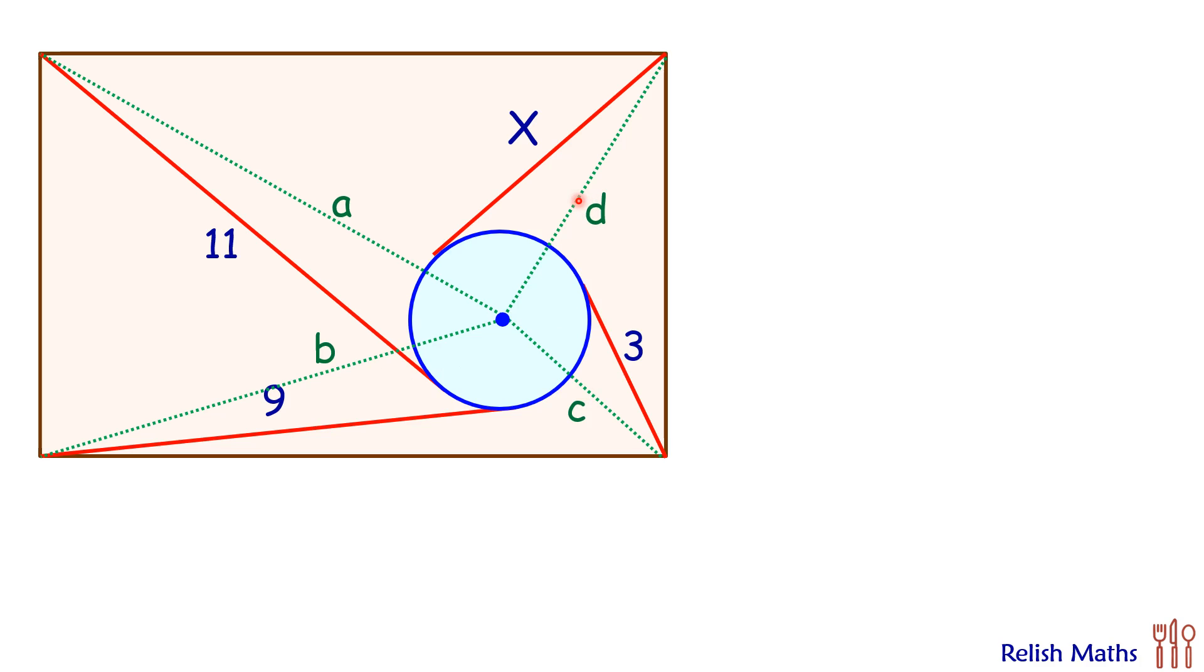Now as per British Flag Theorem, the sum of square of distances, that is a² + c², will be equal to b² + d². Also, let's draw the radius of the circle joining the point of tangencies.